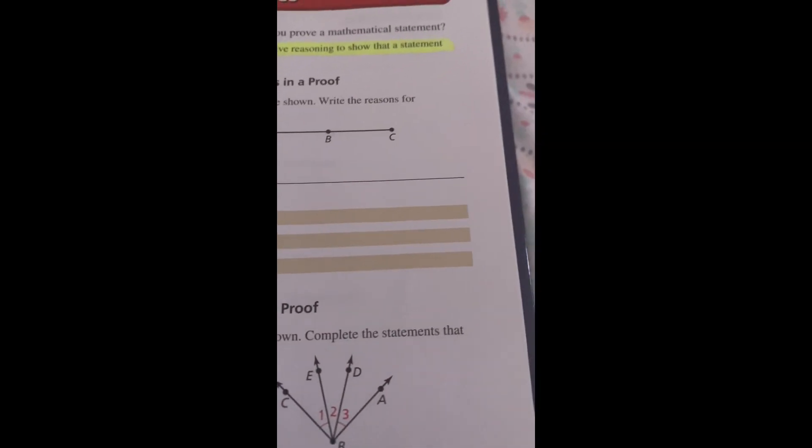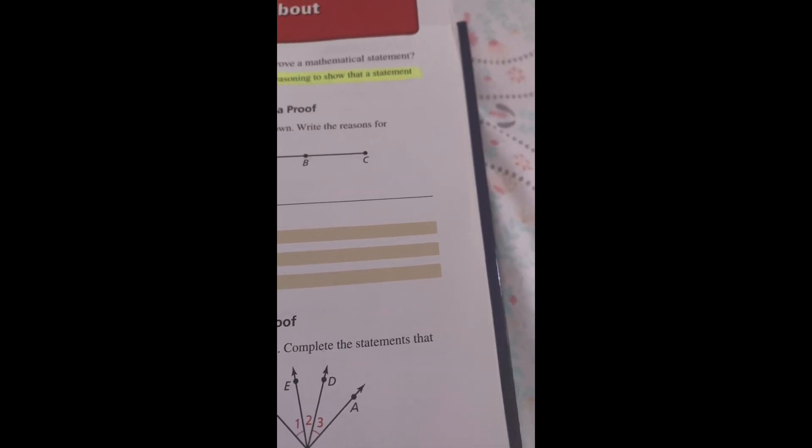2.5 Proving Statements about Segments and Angles. Reasoning Abstractly: To be proficient in math, you need to know and be able to use algebraic properties. Study Tip: